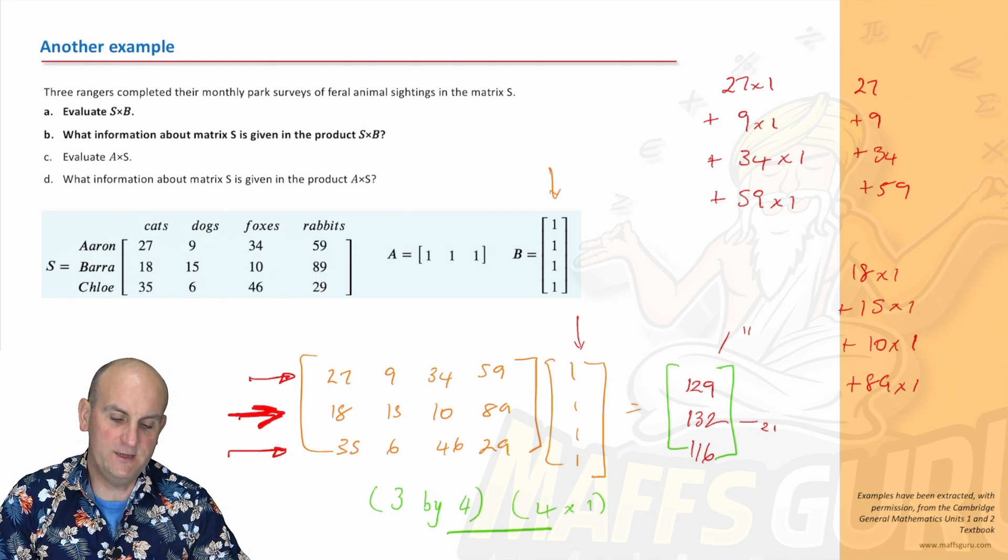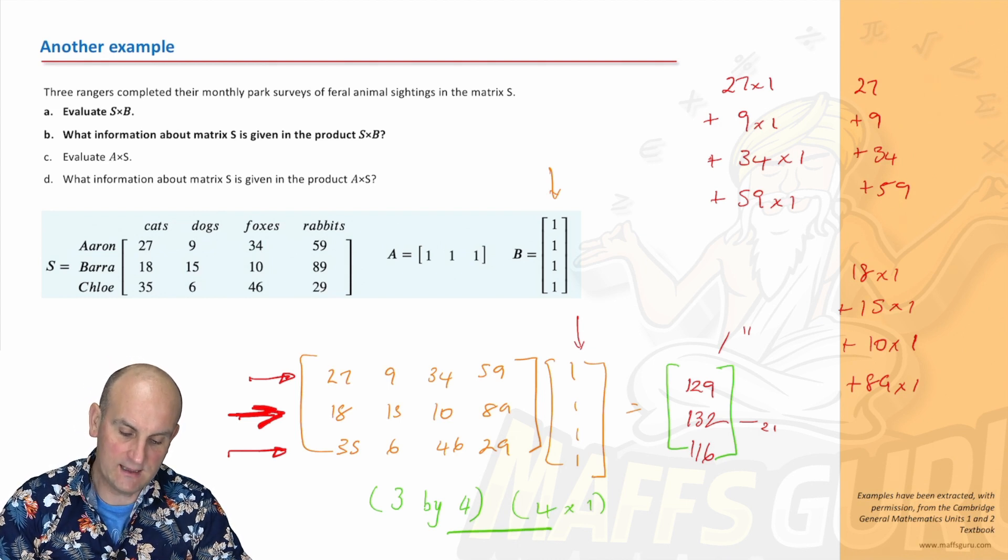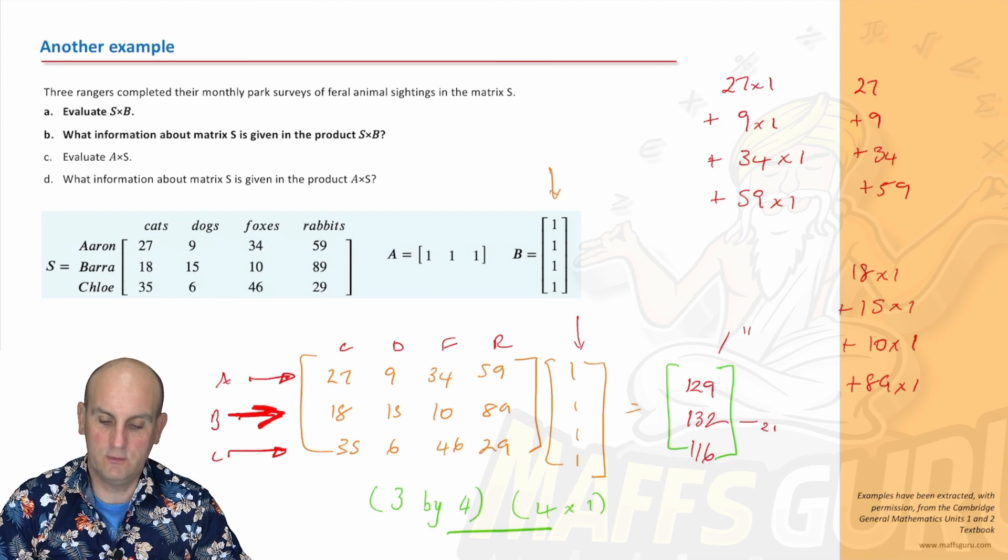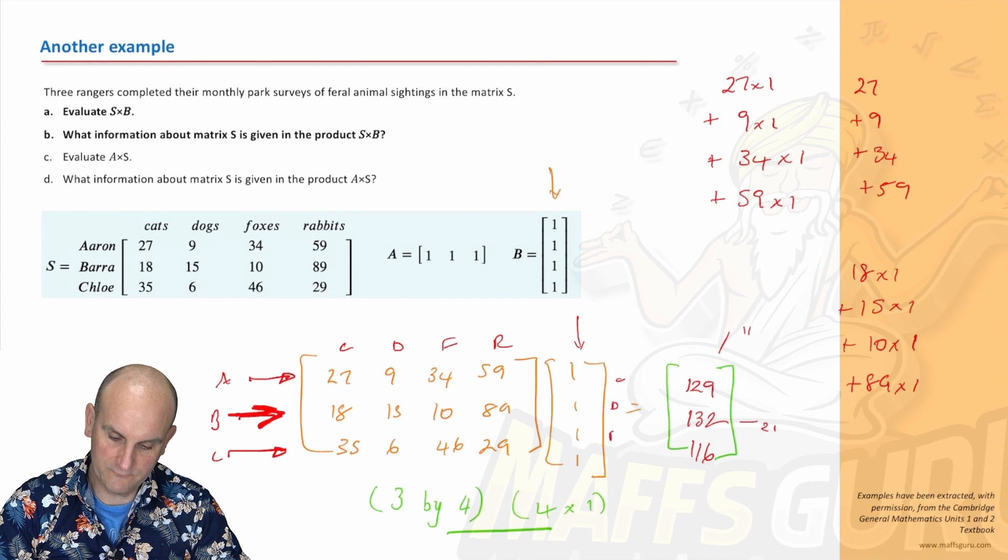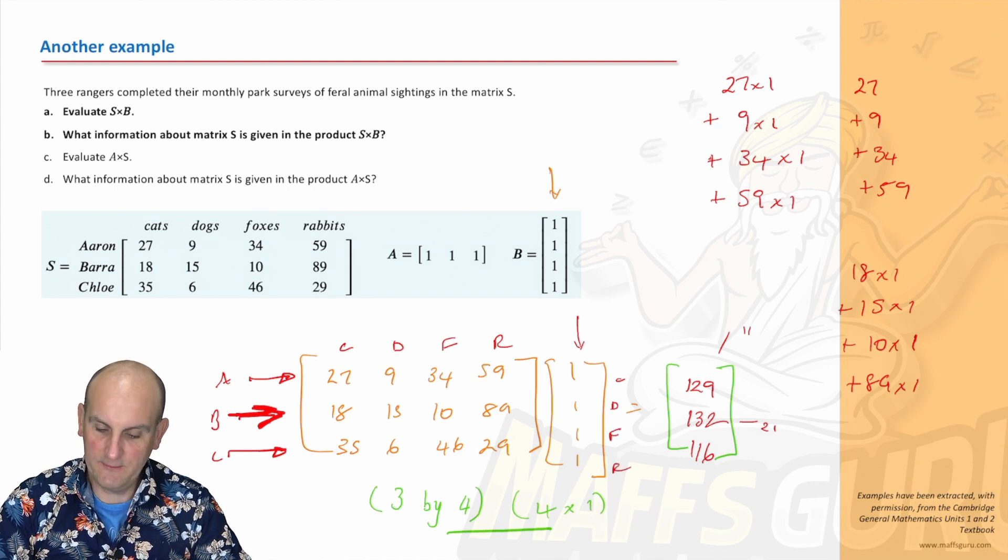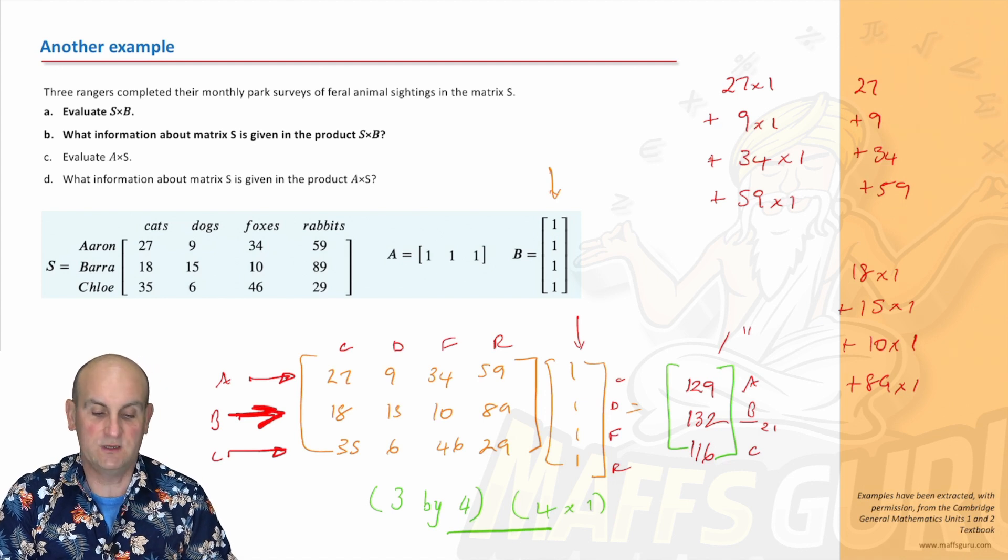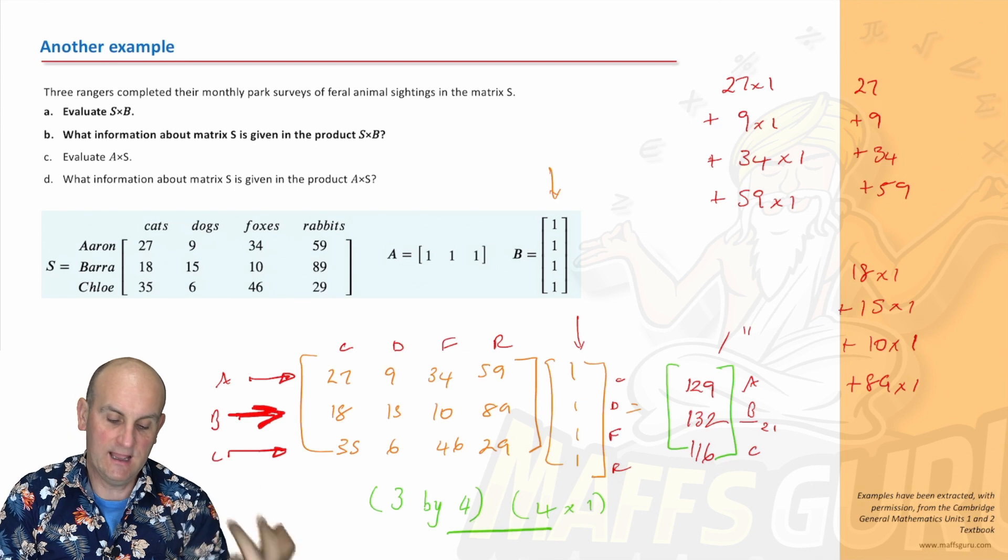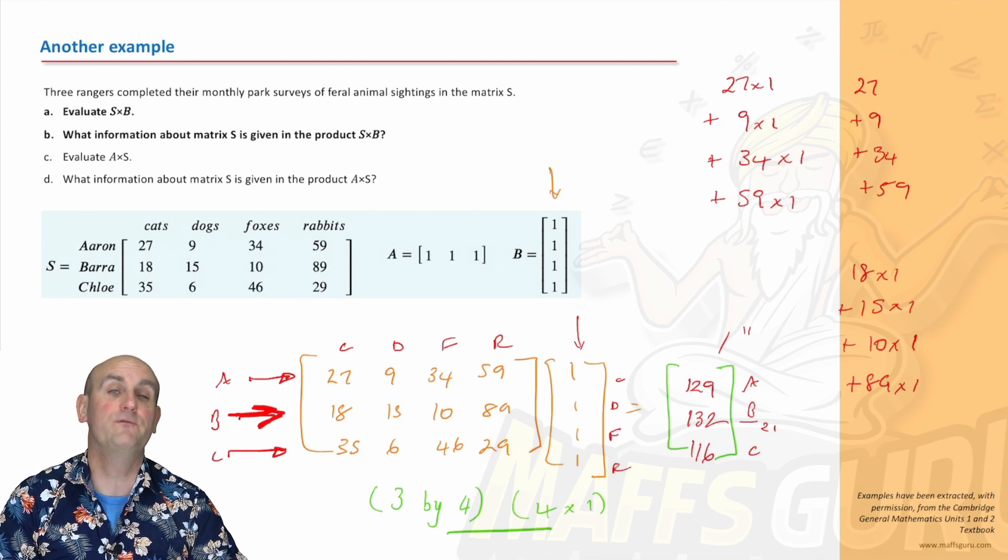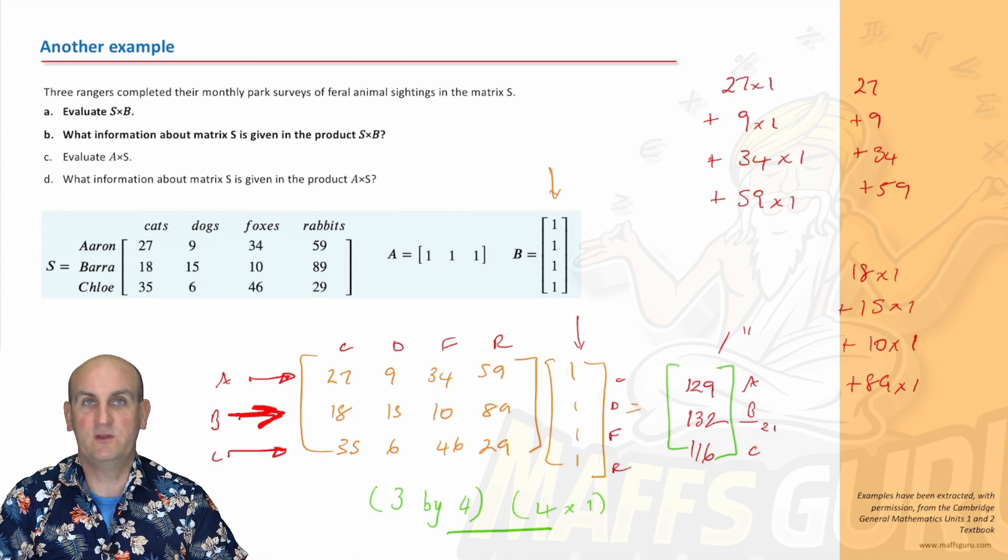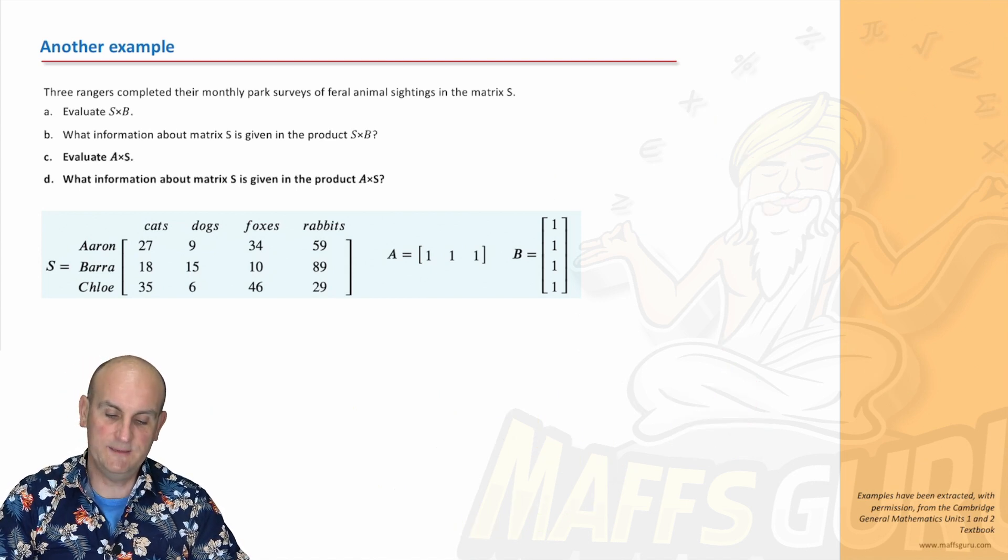What information about matrix S is given for the product S times B? Bearing in mind we had here Aaron, Barra, and Chloe, and we had cats, dogs, foxes, and rabbits. What do all of these 1s stand for? Cats, dogs, foxes, and rabbits. Because they match up, that must mean that these values here are A, B, and C. What it actually stands for is the total number of feral animal sightings that Aaron has, Barra has, and Chloe has. So Aaron would have seen 129 feral animals, Barra would have seen 132, and Chloe 116.